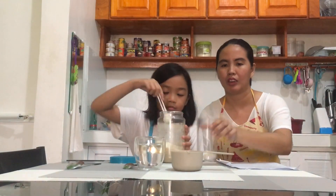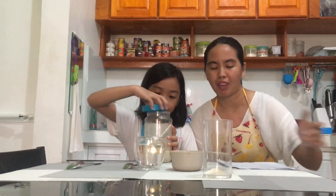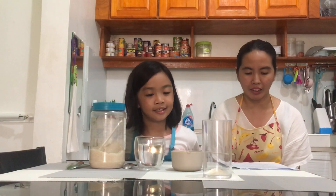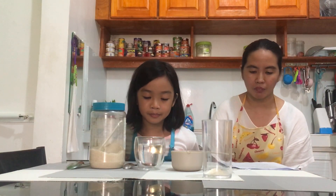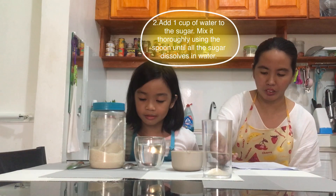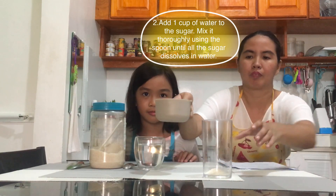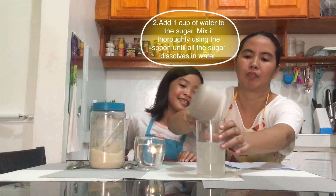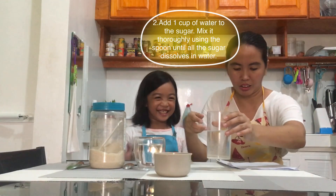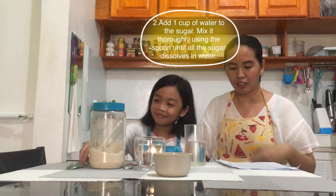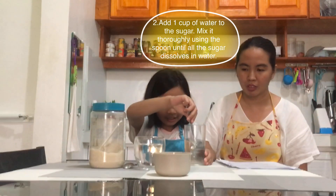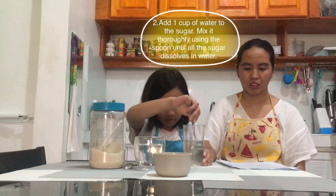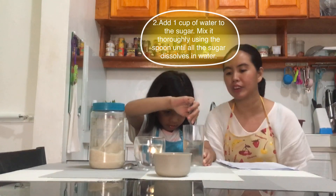We now have the one tablespoon of sugar in the transparent drinking glass. I am going to add the one cup of water to the sugar. Then you will mix it thoroughly using the spoon until all the sugar dissolves.